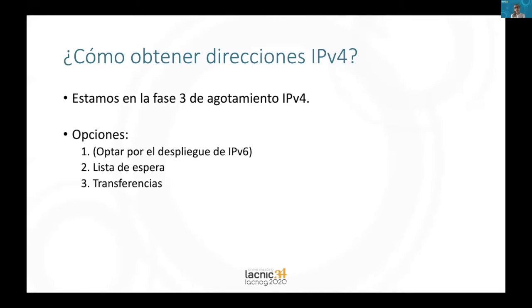How to obtain IPv4 addresses? Alfredo was telling us just now that we are in phase three of the IPv4 exhaustion process, so it is very difficult to obtain IPv4 addresses. Therefore, in order to achieve the deployment in your networks, the first option — and ideally what we recommend — is to opt for deploying IPv6.